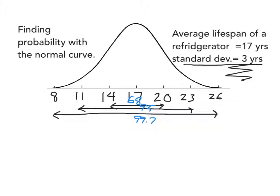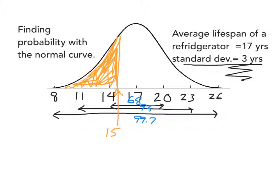If we want to get more detail, we could use a graphing calculator to generate some of these percentages for us. So what if I'm interested in finding out what percentage of refrigerators fail to last 15 years? I could use my graphing calculator along with this normal curve to figure out the percentage of refrigerators that won't make it 15 years. What I'm interested in is figuring out how much area is underneath this curve.